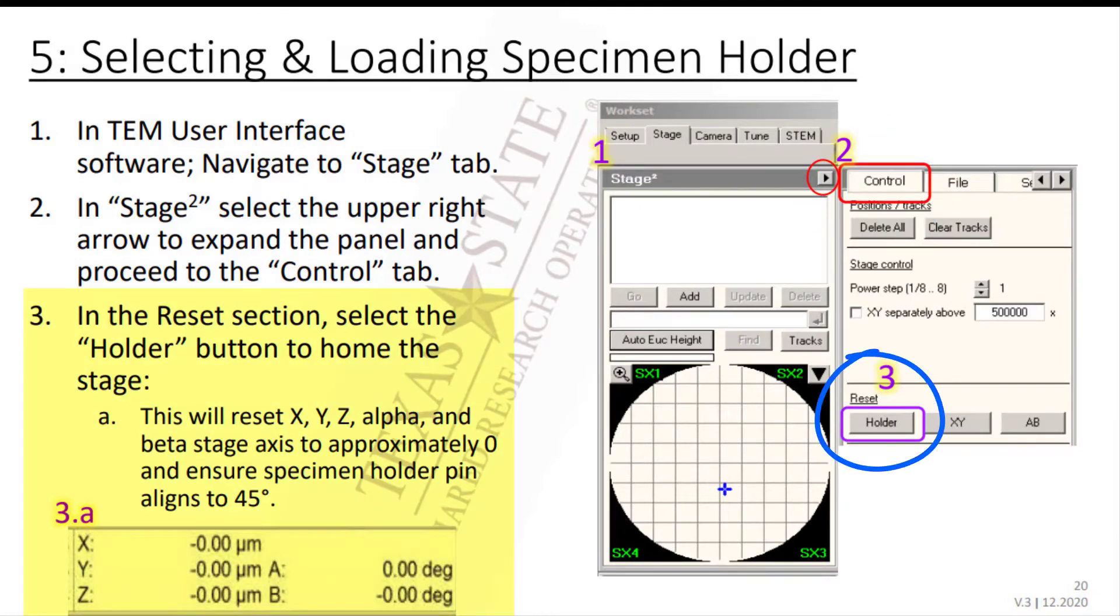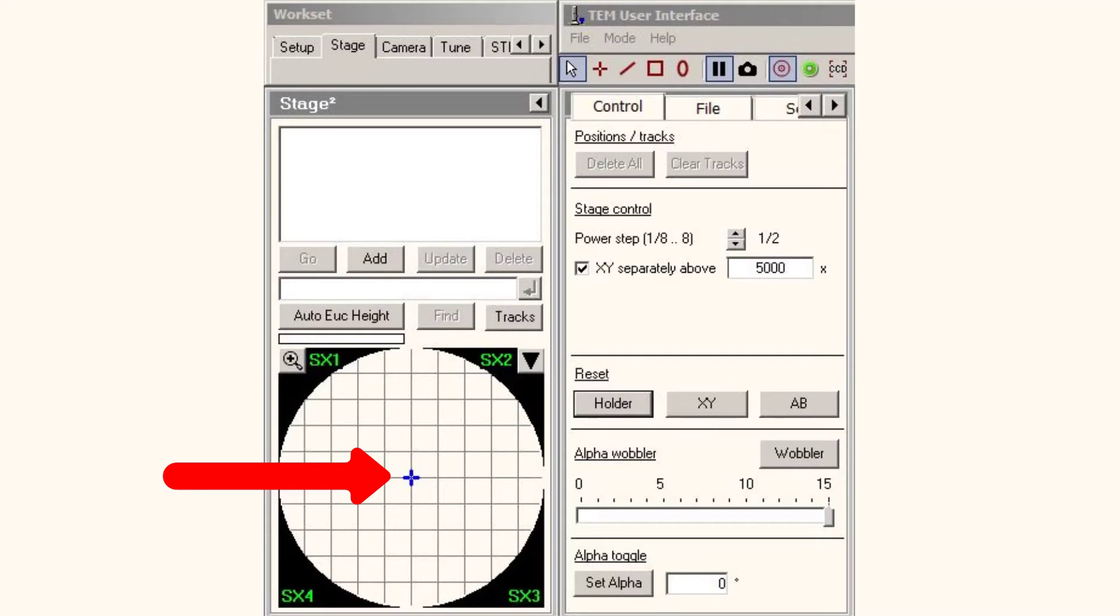In the Reset section, select the Holder button to home the stage. This resets the position of X, Y, Z, Alpha and Beta to approximately zero and ensures the specimen holder pin aligns to 45 degrees.